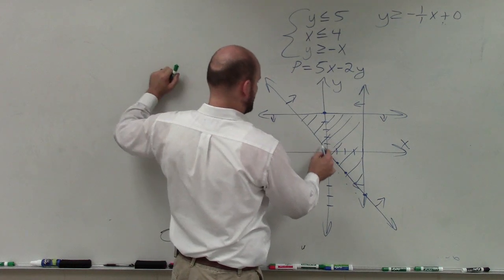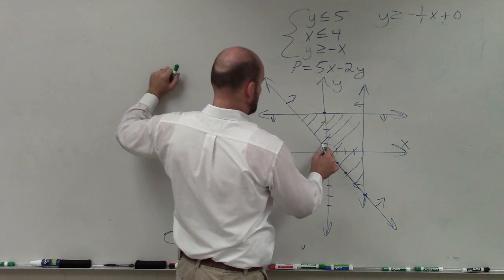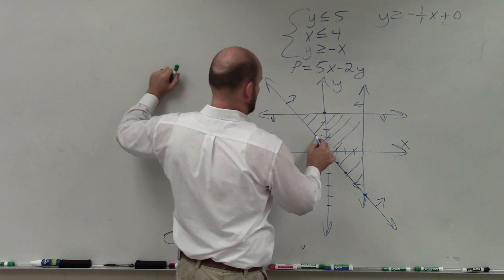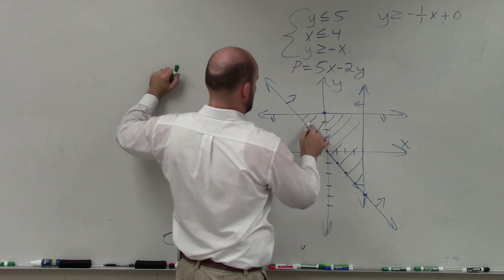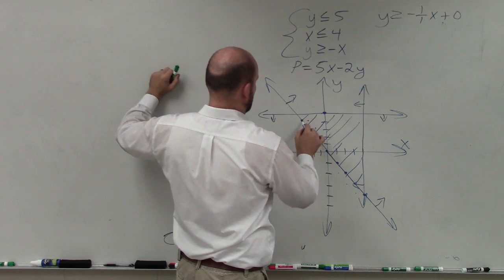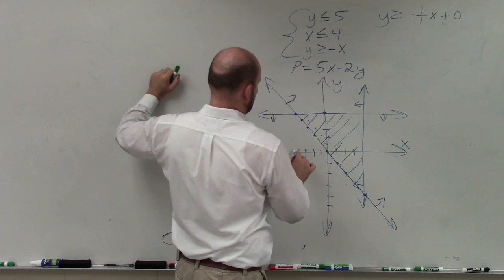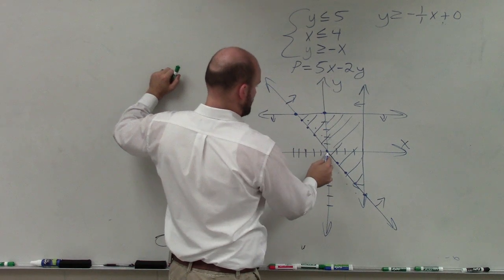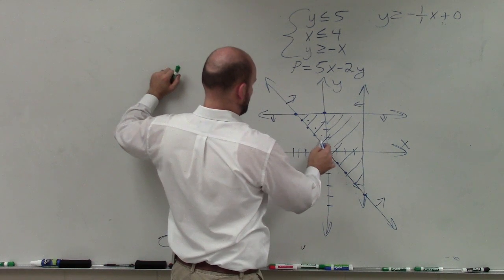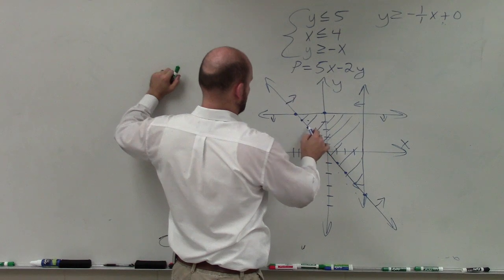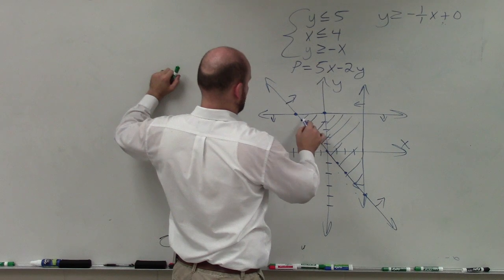Actually, I probably should have gone over 1, up 1 for that slope — going over 1, up 1 repeatedly along that line.